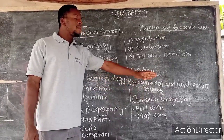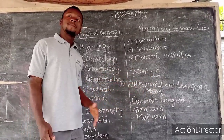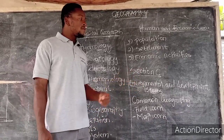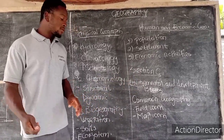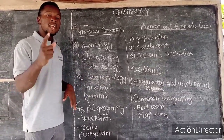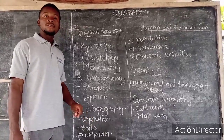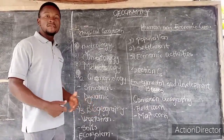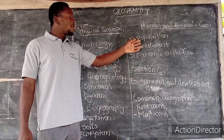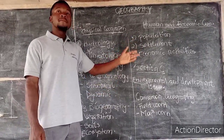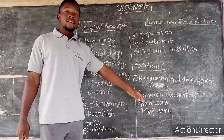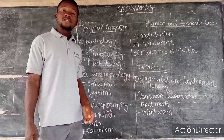They can either set on development or environmental issues. If you see that development issues is the best option, you pick that question. So if you understand geomorphology, pick from geomorphology; if not, pick from biogeography. If you understand settlement, population, or economic activities, pick one question from there. For the last section, whichever question comes, you pick from there.